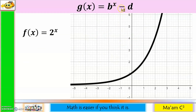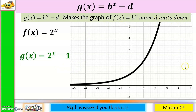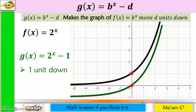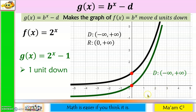What about if I have b raised to x minus d? Let us say 2 raised to x minus 1. Because of the negative, it will make the graph move d units down. So my graph will move 1 unit down. Using the y-intercept, moving the graph 1 unit down, the new graph should pass through here. For the domain and range of the original function, it is still the same. For the green graph, the domain is still negative infinity to positive infinity. But for the range, you start seeing the graph at negative 1 — going up. Negative 1 is not included because it is the new horizontal asymptote. So from negative 1 to positive infinity. Once again, the range depends on your d.